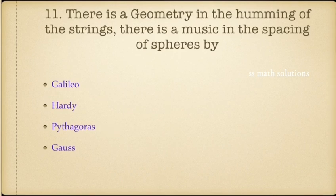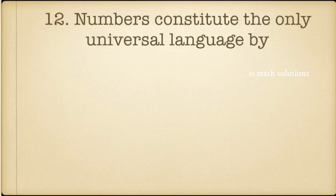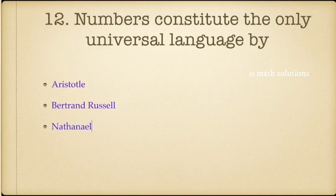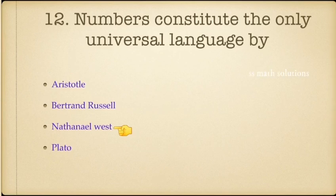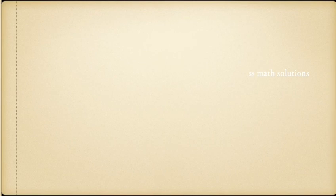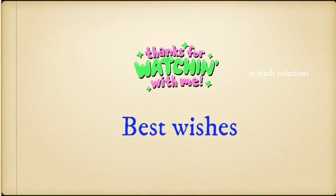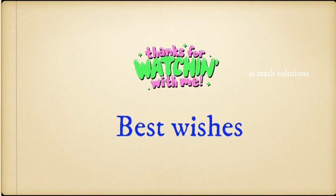Last question: 'Numbers constitute the only universal language' — said by whom? Options: Aristotle, Bertrand Russell, Nathaniel West, Plato. The answer is Nathaniel West — option three. Hope you enjoyed and found this helpful. Please comment your opinion and subscribe for more videos. Thank you.